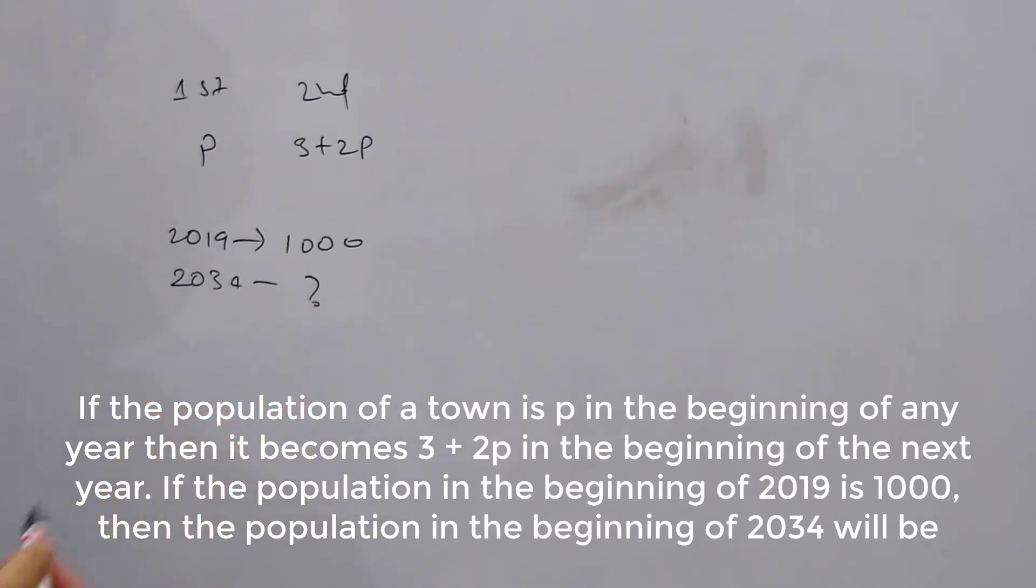So we know the formula for how the population is increasing. We just need to first find the pattern. Once we get the pattern, we can get the value or the population in 2034. So let's see what the pattern is.